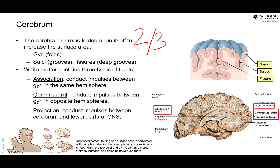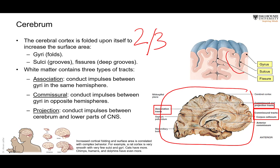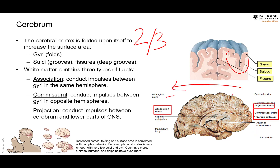The white matter inside the cerebral cortex — you can see a dissection here showing bundles of axons — is of three types. They are either association fibers, which connect gyri in the same hemisphere. Or we have commissural fibers, which cross from one hemisphere to another — when there is a decussation, they are commissural fibers. The third type are projection fibers, which either project up as sensory fibers, or project down as motor fibers.